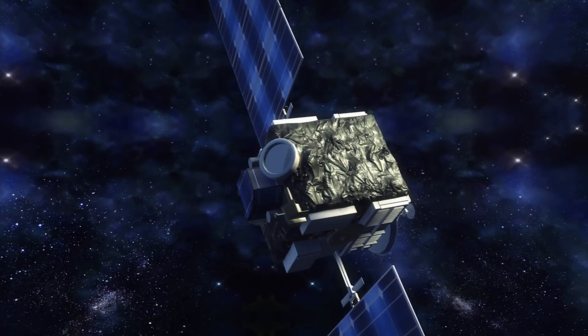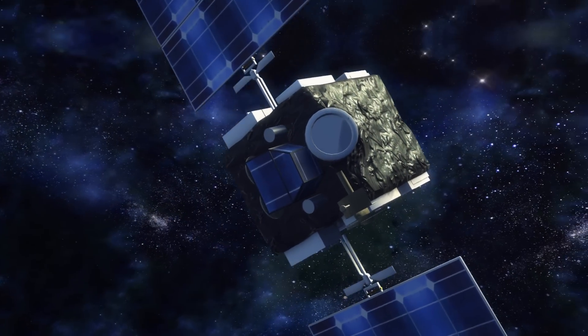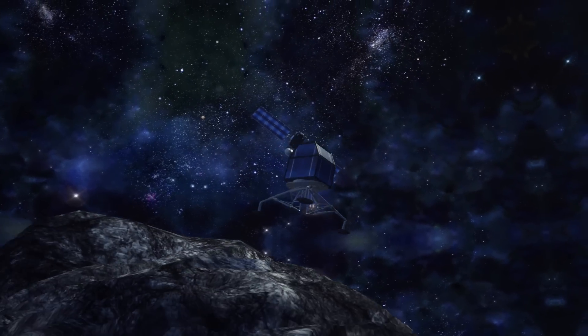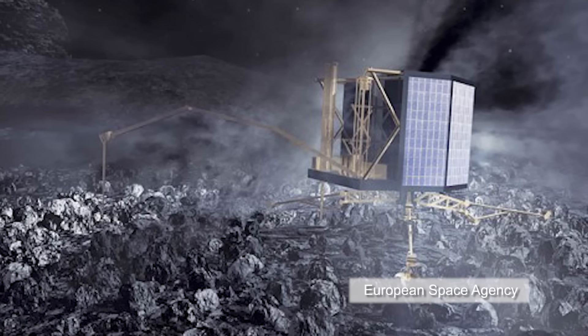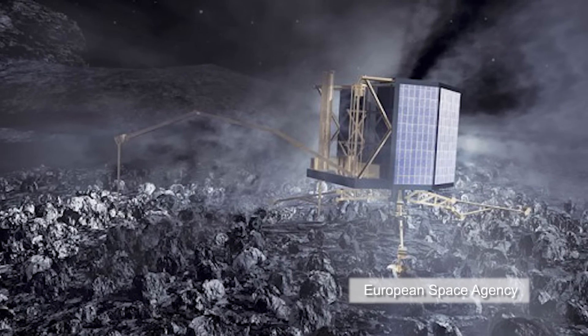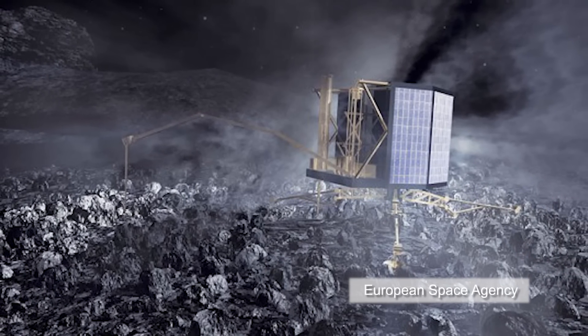When Rosetta nears comet 67P Churyumov-Gerasimenko, it will deploy a lander named Philae, which will use a harpoon to anchor to the comet's surface. Scientists expect it will take a few hours for the spacecraft to wake up from slumber mode.